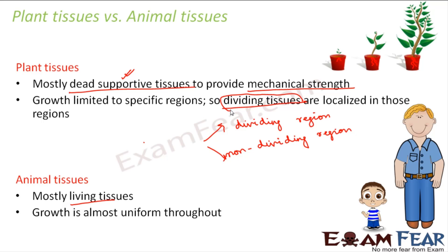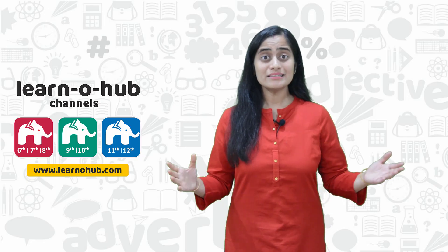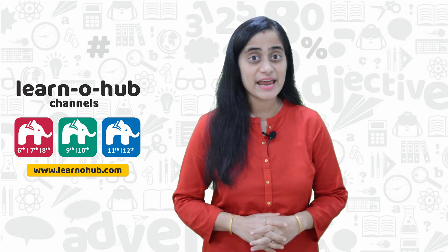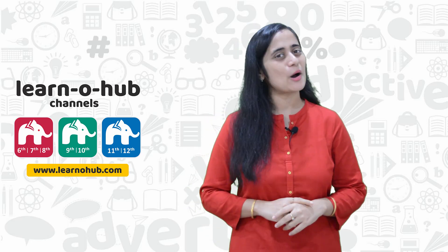And that is why in animals, dividing tissues are uniformly distributed. So we saw how plant tissues and animal tissues are structurally different because plants are static and animals are moving, and how they are functionally different because growth is limited to certain regions in plants whereas in animals it is almost uniform throughout. With this, we saw that plant tissues and animal tissues are quite different from each other. If you found the video useful, do not forget to share it with your friends so they can also benefit.